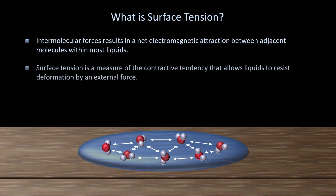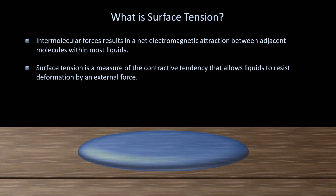Surface tension is a measure of the contractive tendency that allows liquids to resist deformation by external force. For example, if we take this puddle and carefully place a paperclip on top, the paperclip imparts a force created by its weight on the surface of the water. This force pushes down on the surface, and this deformation of the water surface pushes apart the water molecules underneath the paperclip ever so slightly. If the sum of all the attractive forces between the disrupted molecules is greater than the paperclip's weight, the clip will rest on the surface of the water.